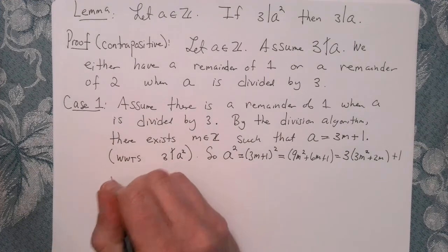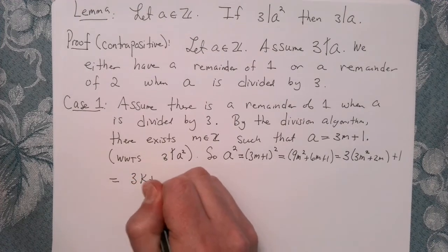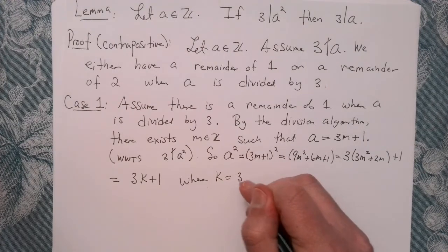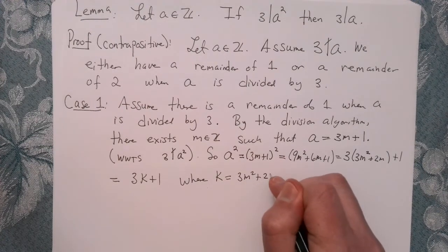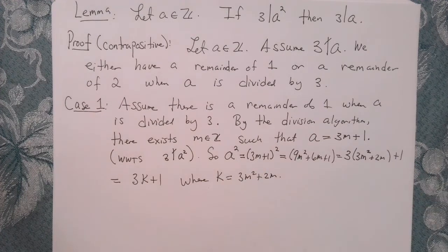And so I'll say that equals 3K plus 1, where K equals 3M squared plus 2M. And so again, by the division algorithm, A squared has a remainder of 1 when it's divided by 3.